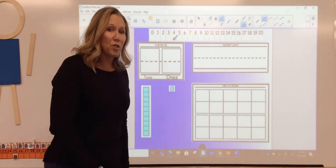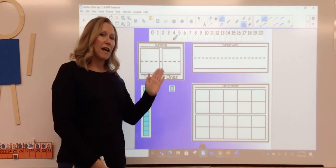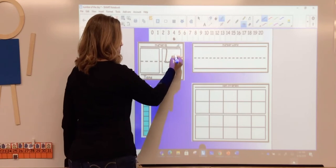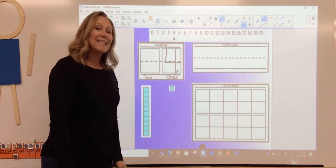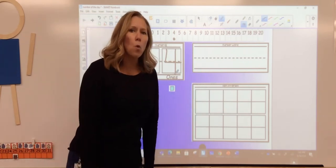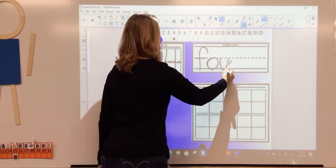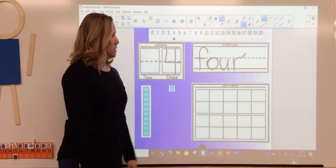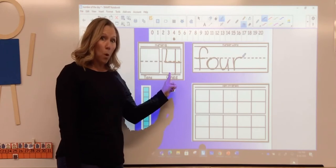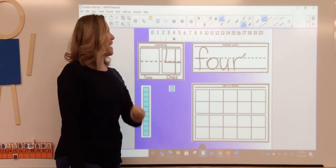So now we're going to write the number four. When I write my numbers, just like when I write my letters, I start at the top and I come down. Here we go. Four. That is the number four friends. Now I'm going to write the word four. Four. F-O-U-R. That is the word four. This is the number four. Can you show me four fingers? Good job.